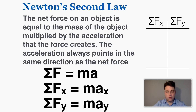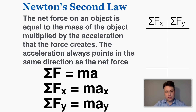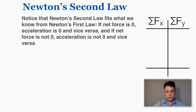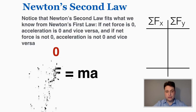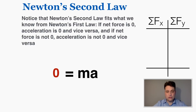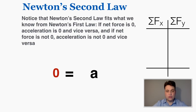When I construct my force table I can put max and may into the net force spot to tell me what's going on with the object. Notice that Newton's second law fits what we know from Newton's first law. If the net force is zero, acceleration must be zero, because if the left side of the equation is zero and the mass is some positive number, the acceleration must be zero to cancel that out.